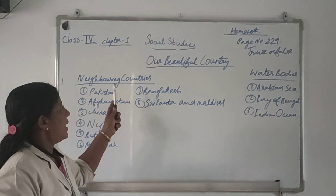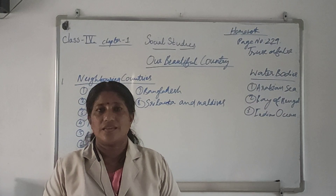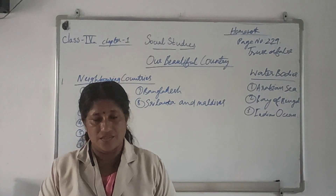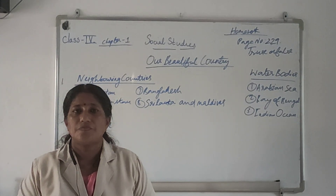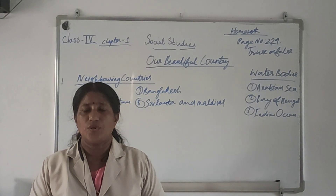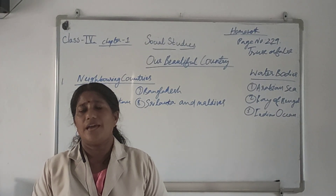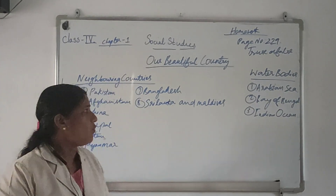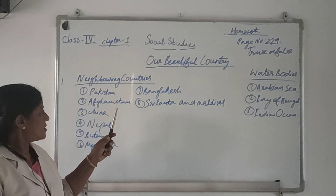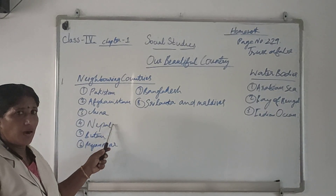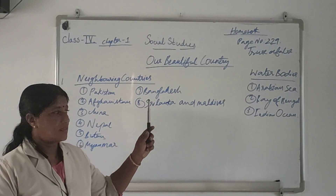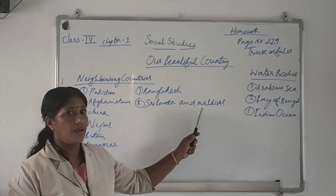India has neighboring countries. India has 28 states and 9 union territories. Our neighboring countries are Pakistan, Afghanistan, China, Nepal, Bhutan, Myanmar, Bangladesh, Sri Lanka, and Maldives.